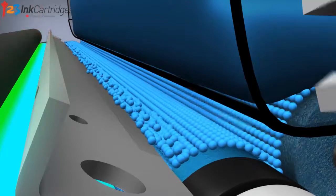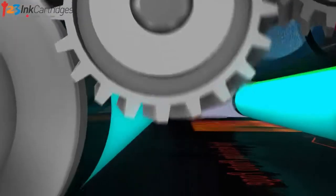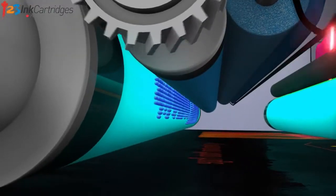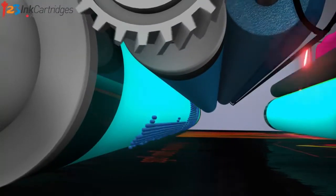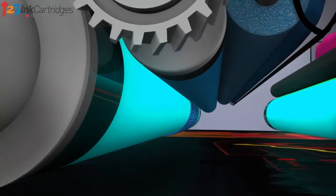As toner moves from component to component, it develops a negative charge, which is attracted to the more positively charged image on the OPC drum. The toner on the OPC drum is then transferred to the intermediate transfer belt.